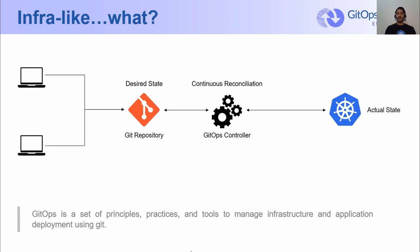The notion of a GitOps controller is to have a continuously running loop that performs the following: Git clone repo, discover manifests in the cloned repo, and run kubectl diff and kubectl apply against those manifests to handle config drifts.